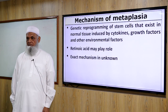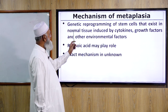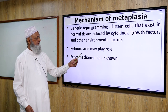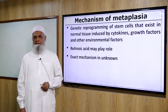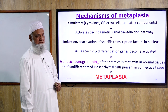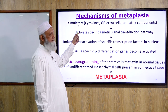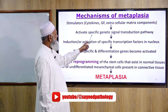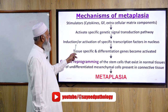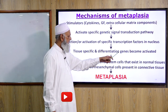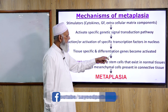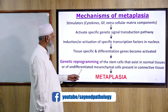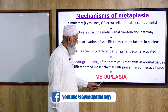Mechanism of metaplasia: Genetic reprogramming of stem cells that exist in normal tissue, induced by cytokines, growth factors, and other environmental factors. Retinoic acid may play a role; the exact mechanism is still unknown. Stimulators — cytokines, growth factors, and extracellular matrix components — activate a specific genetic signal transduction pathway, leading to induction and activation of specific transcription factors in the nucleus. Tissue-specific and differentiation genes become activated, ultimately causing genetic reprogramming of stem cells or undifferentiated mesenchymal cells in the connective tissue, leading to metaplasia.